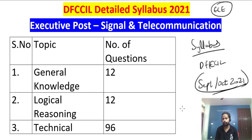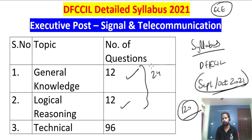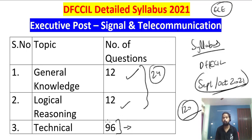There will be a total of 120 questions. 12 questions will be from General Knowledge and 12 questions from Logical Reasoning, making 24 questions from GK and logical reasoning combined. The remaining 96 questions will be on technical subjects for Signal and Telecommunication — covering network, control, signal, communication, and more. This is the exam pattern for the DFCCIL syllabus exam for Signal and Telecommunication post.